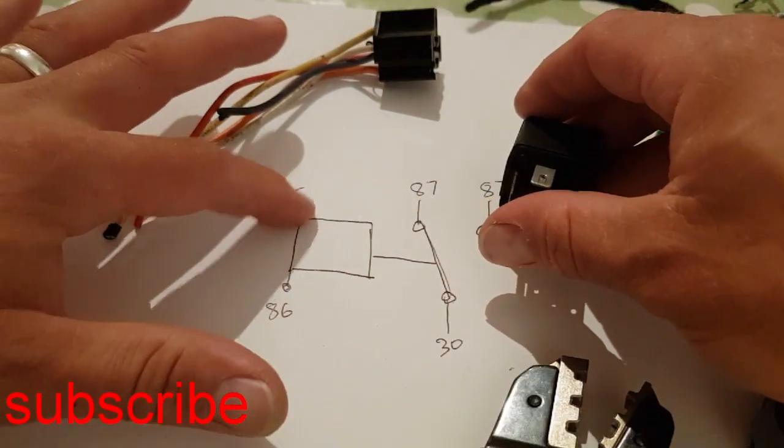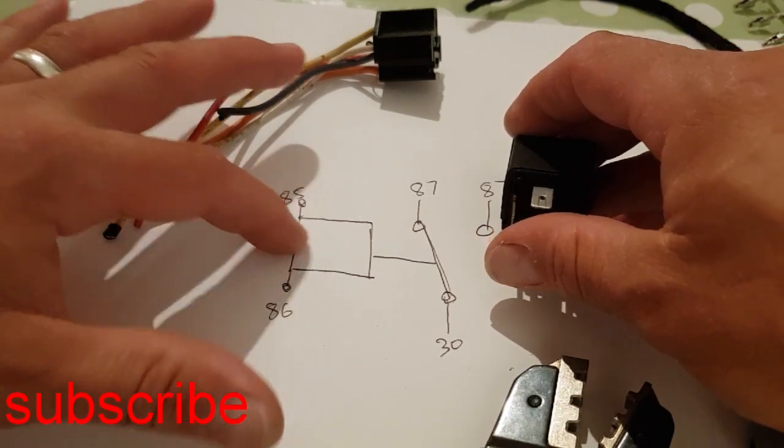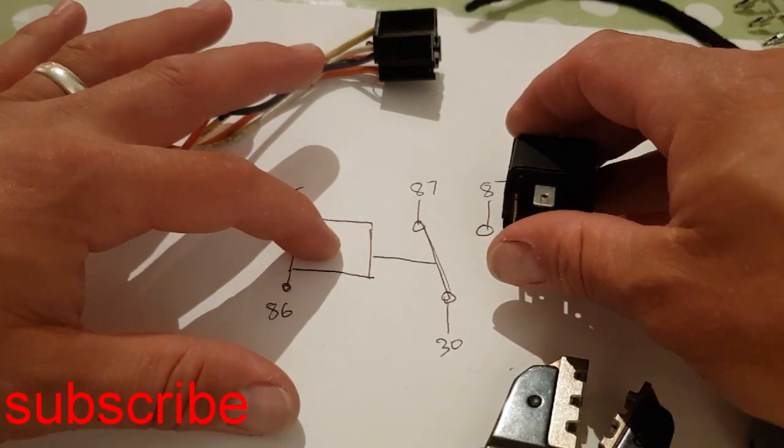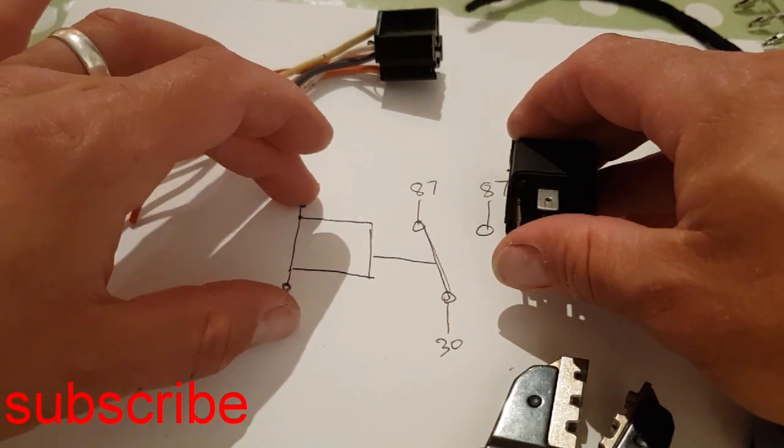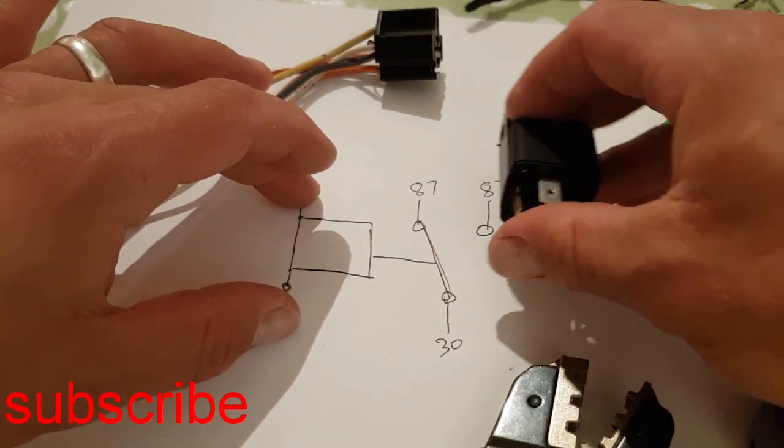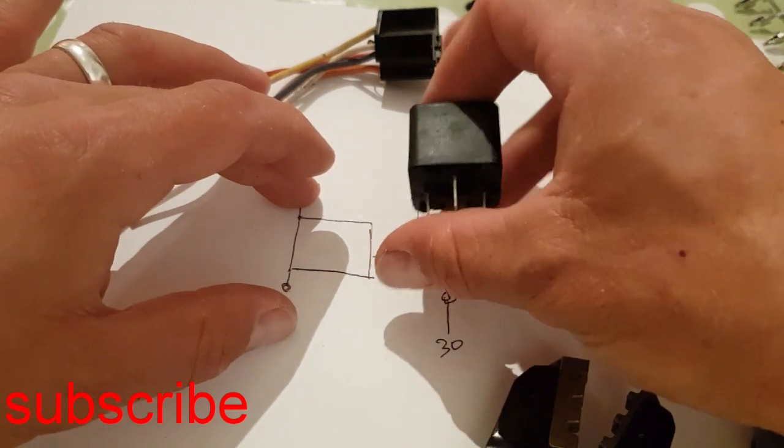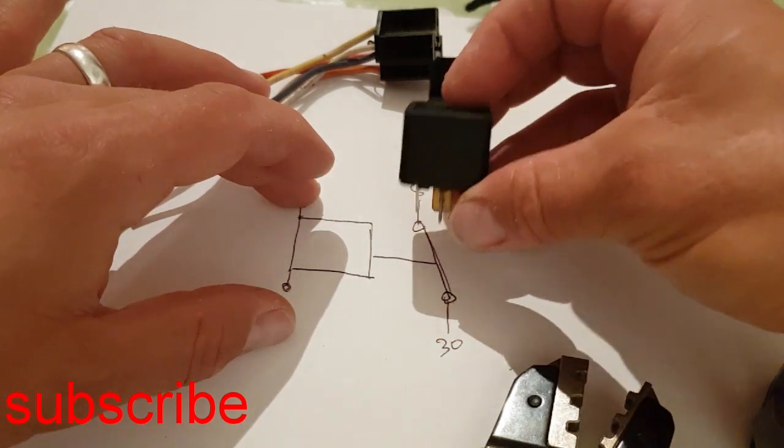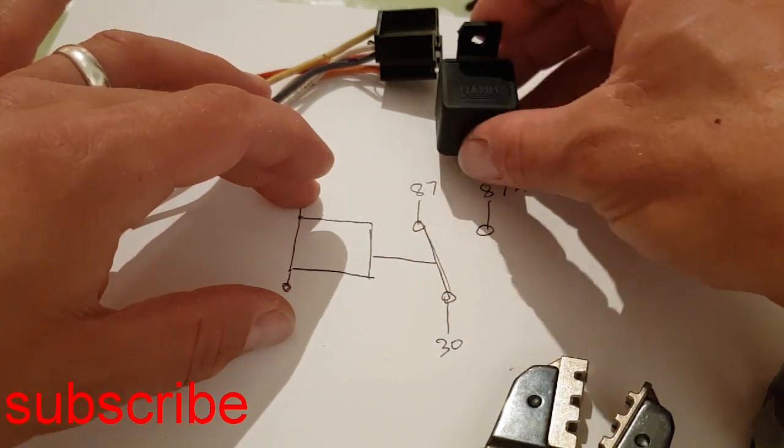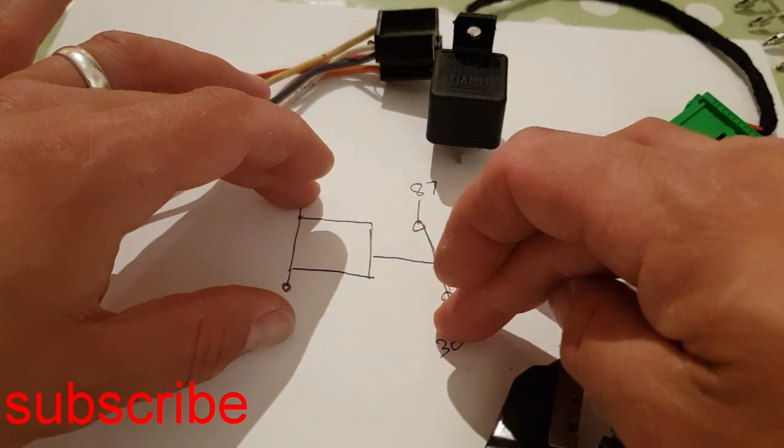Whereas you only need a 2 amp, if that, load to switch this electromagnet on. So you can have a much smaller load with much thinner wiring in the vehicle and a relay for a fuel pump or some lights or a pump or a winch on the outside of the vehicle nearer the item.